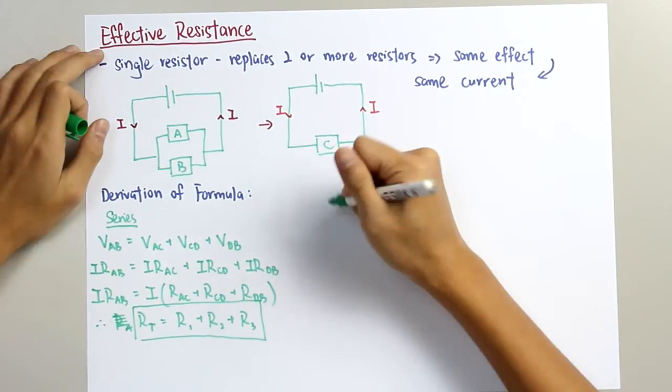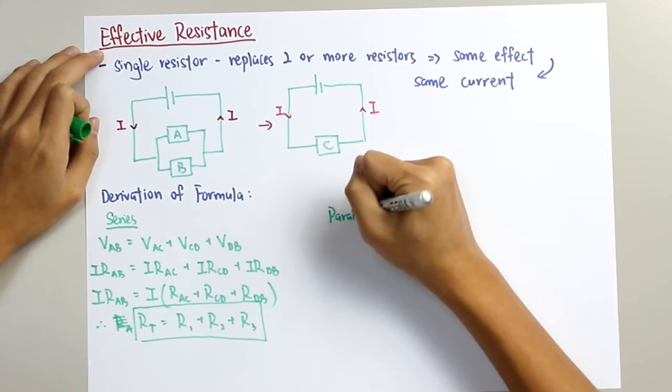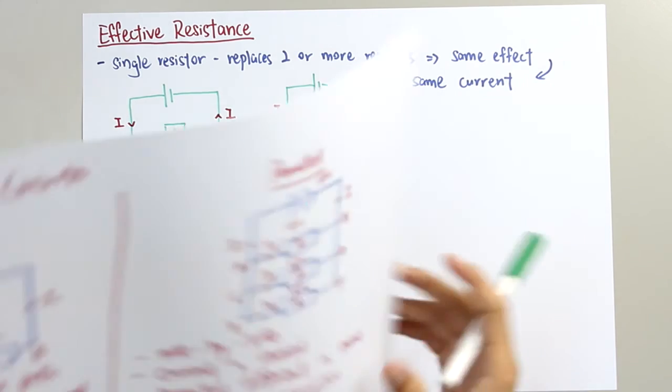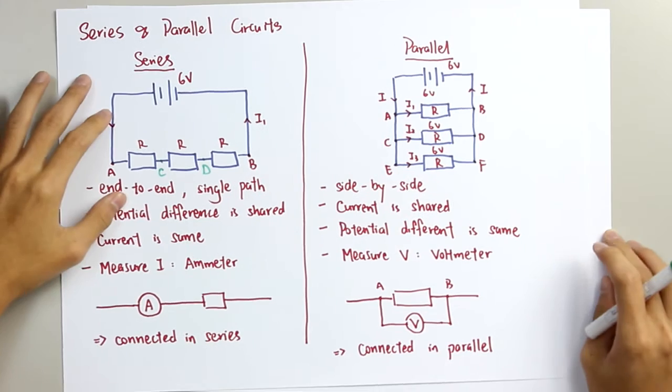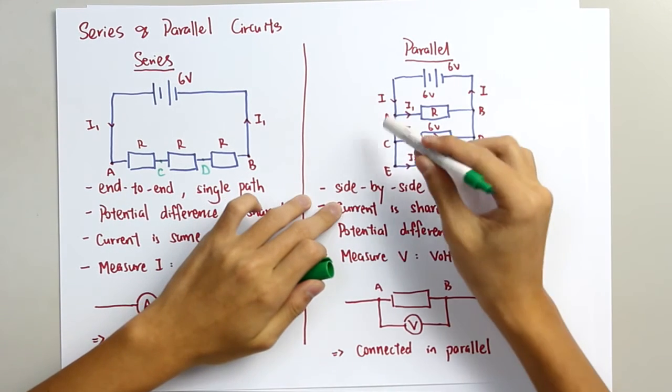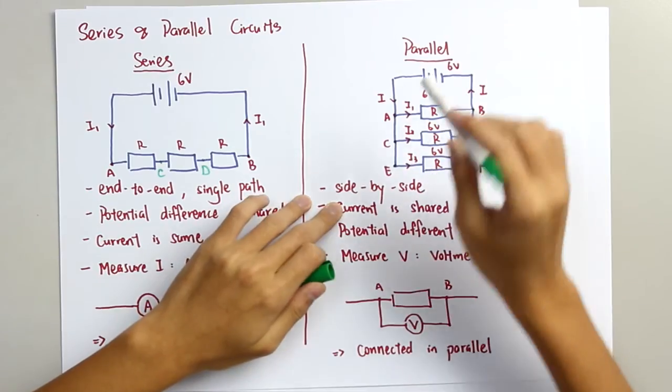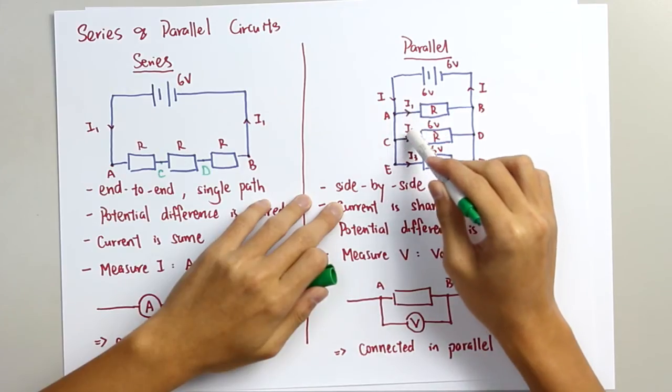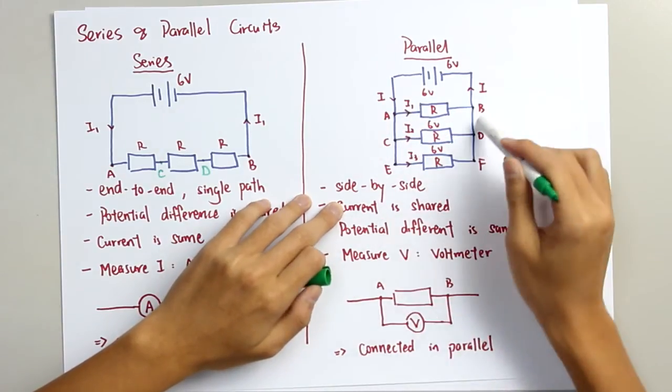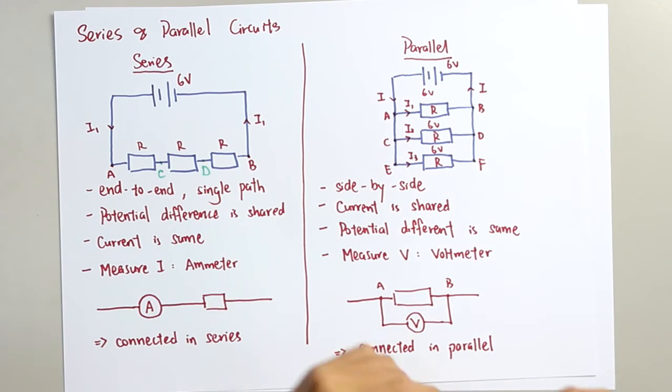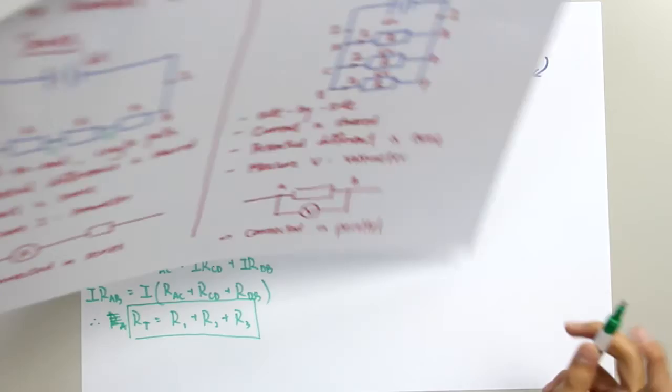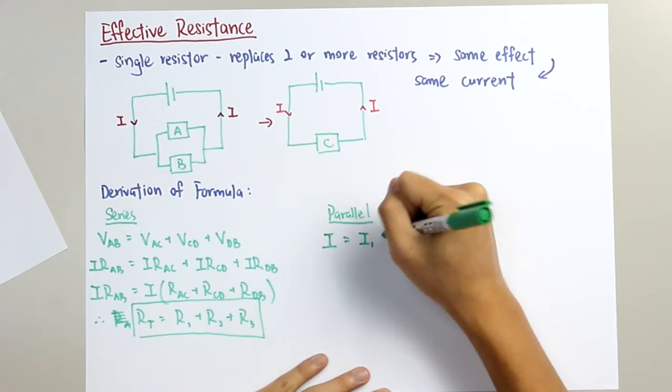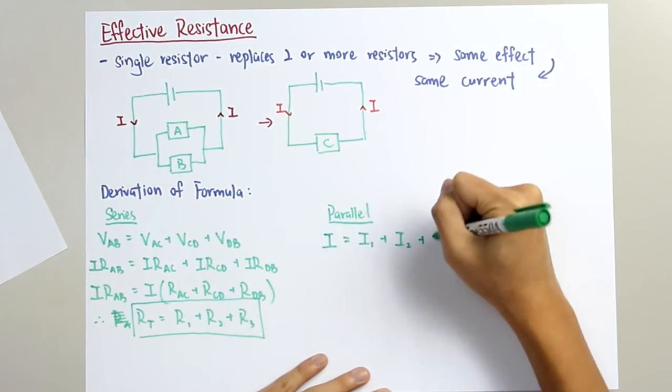Next, for parallel. Again, let's look at the paper before this. We can see that the current of the host circuit equals to the current of I1, I2 plus I3. So I equals to I1 plus I2 plus I3.